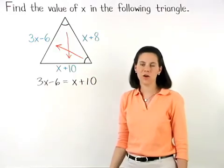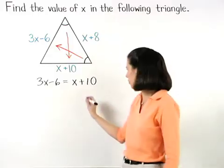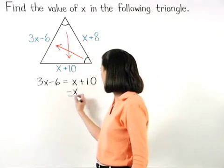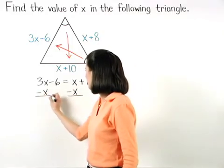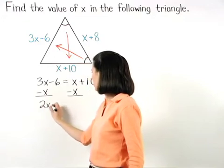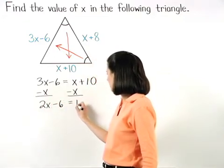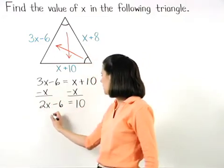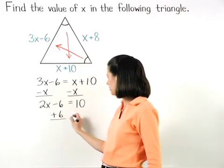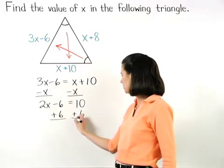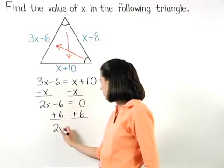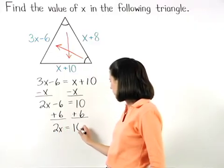Solving from here, we first subtract x from both sides to get 2x minus 6 equals 10. And adding 6 to both sides gives us 2x equals 16.